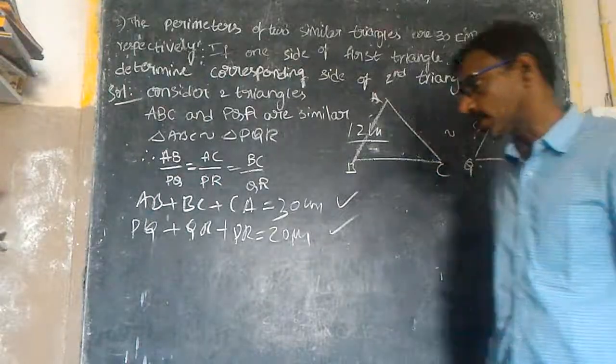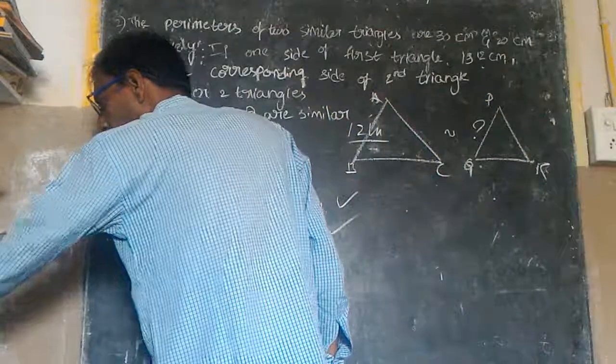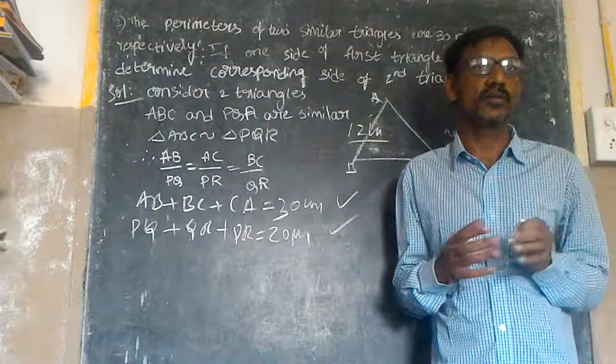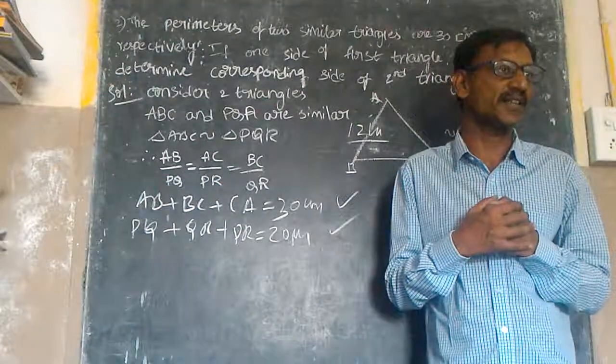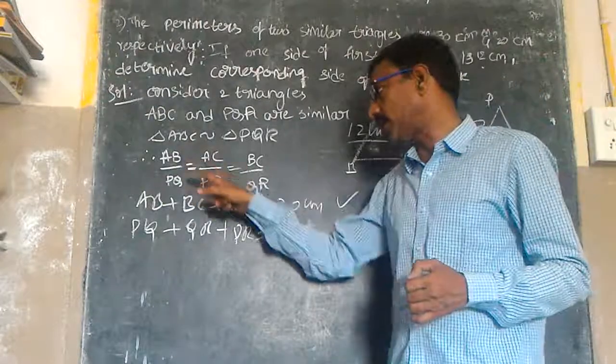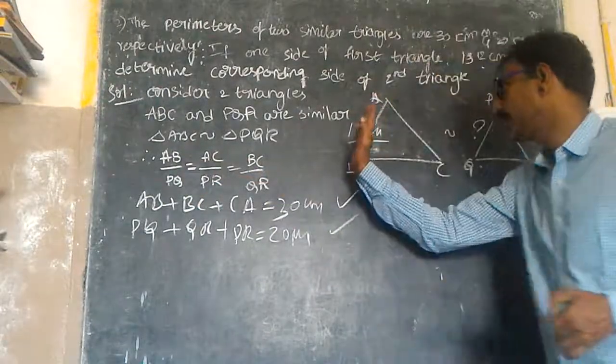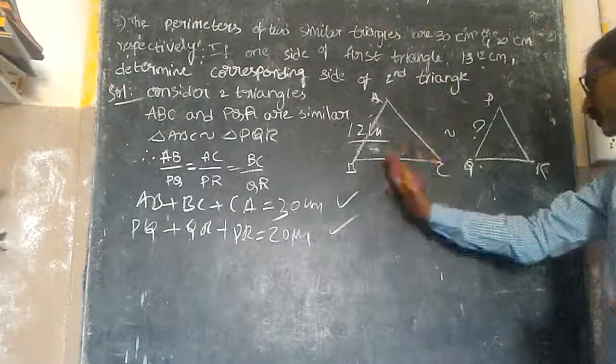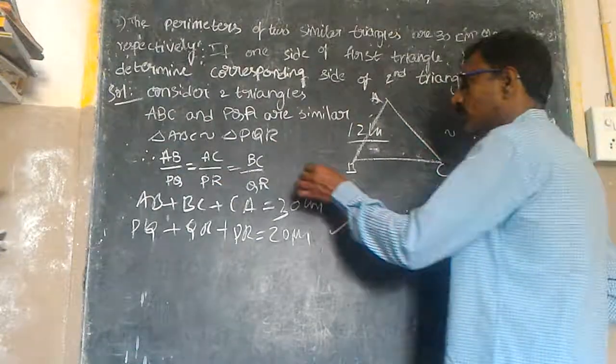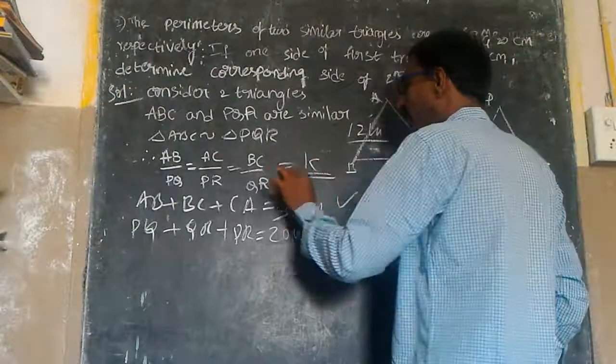If two triangles are similar, they follow one rule that is scale factor k. AB by PQ is equal to BC by QR is equal to AC by PR, equal to some k factor.